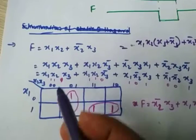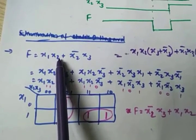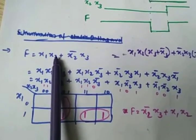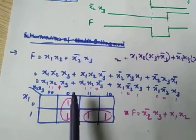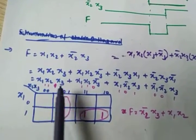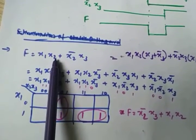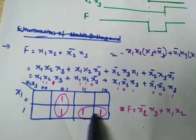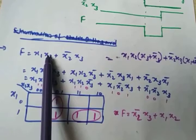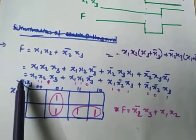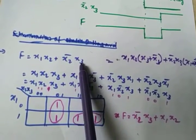Another method for direct K-map mapping: f = x1x2 + x2_bar x3. For x1x2 — x1 is 1 means this entire row region; x2 is 1 means these columns. So x1x2 gives two cells as 1. For x2_bar x3 — x2_bar means x2 = 0 (first term is 0), and x3 = 1. So 0-1 in the x2x3 column gives that cell, and since x1 is missing, both rows are 1.